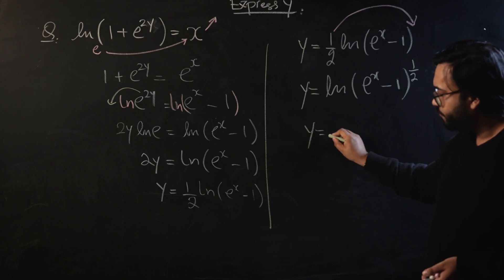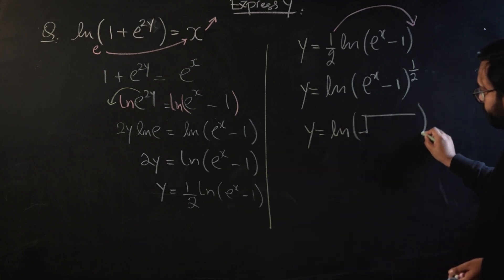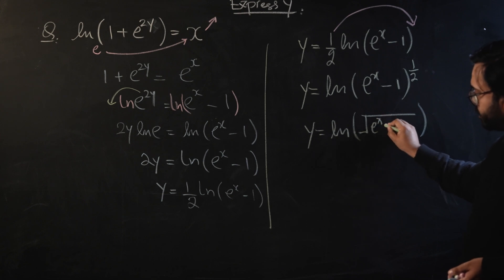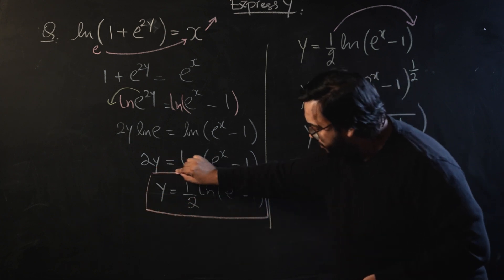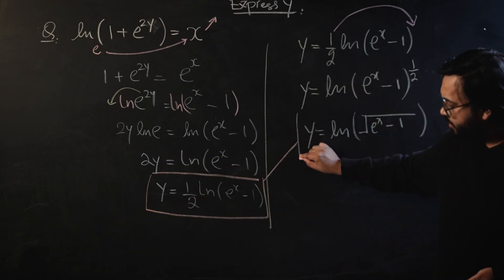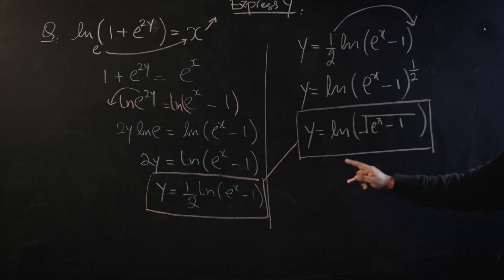And later on we can use the fact that power 1 by 2 is equivalent to a square root, and you can also write your final answer as log of square root of e raised to the power x minus 1. Both of these terms are considered equivalent forms of each other, so if you're ending at any one of these it would be considered a correct answer.